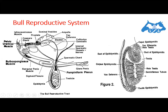The next portion is the urethra. As depicted near the pelvic urethral muscles in the figure, the urethra is the tube in the penis through which semen is discharged at the time of copulation and through which urine is excreted.